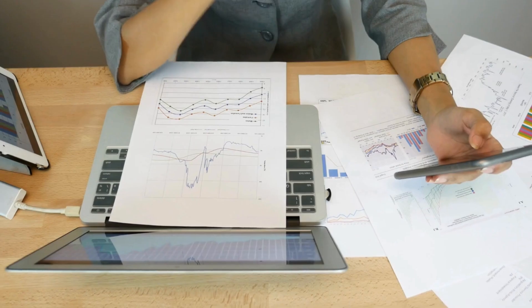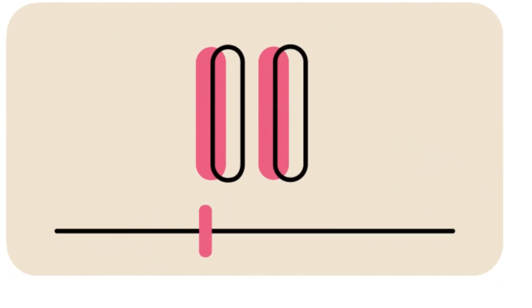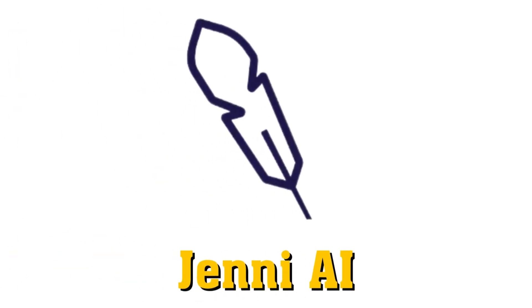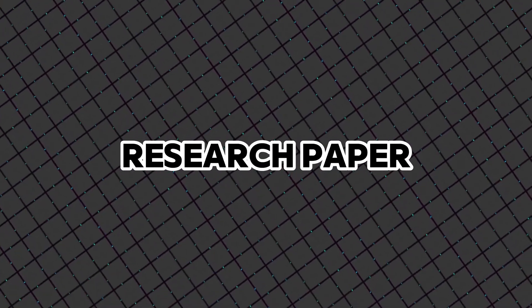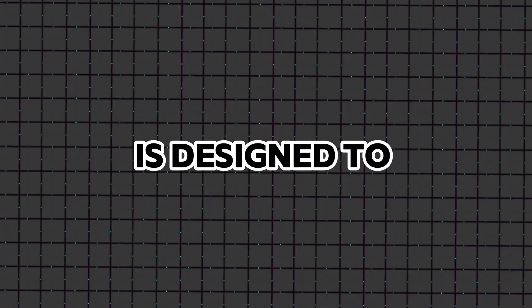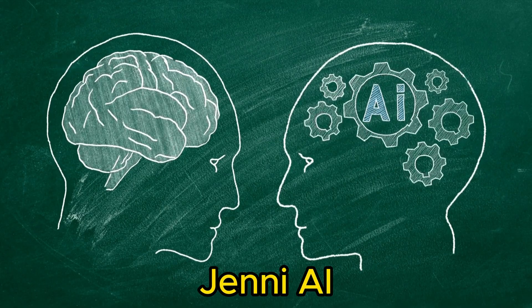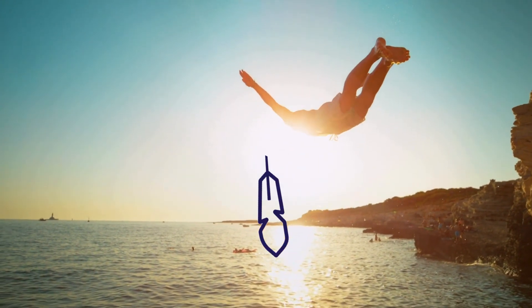Hey scholars and researchers, are you struggling to make your academic writing process smoother and more efficient? Today we have an incredible tool to share with you that can revolutionize the way you approach your research papers. Meet Jenny AI. Our goal is to help you improve the quality and speed of your academic writing, whether you're working on a thesis, dissertation, or a research paper. Jenny AI is an advanced writing assistant powered by artificial intelligence, specifically designed for academic writing. Without further ado, let's dive into exploring Jenny AI.